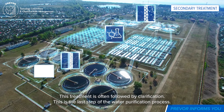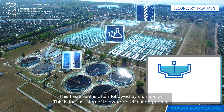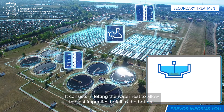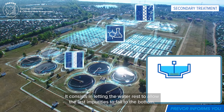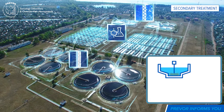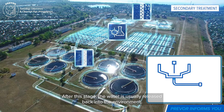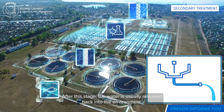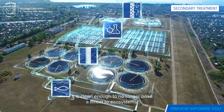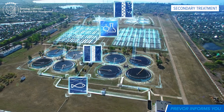Clarification is the last step of the water purification process. It consists in letting the water rest to allow the last impurities to fall to the bottom. After this stage, the water is usually released back into the environment — it is clean enough to no longer pose a threat to ecosystems.